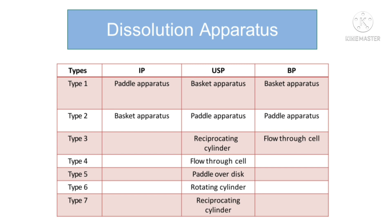Dissolution apparatus from Type 3 to Type 7 are the same as the USP apparatus for IP. Out of these, Types 6 and 7 are used for transdermal patches, while the rest of the dissolution apparatus are used for different types of tablets and capsules.